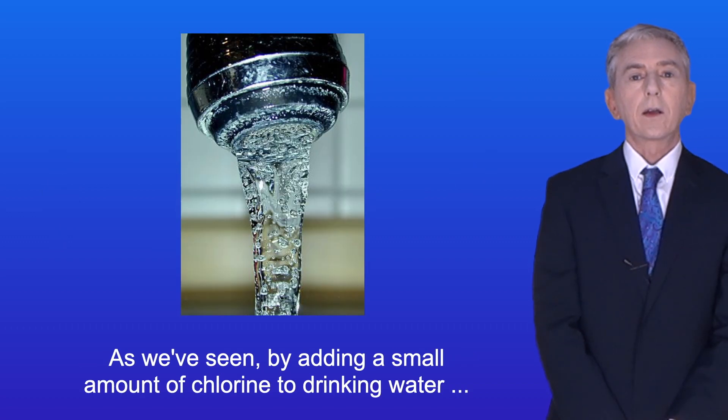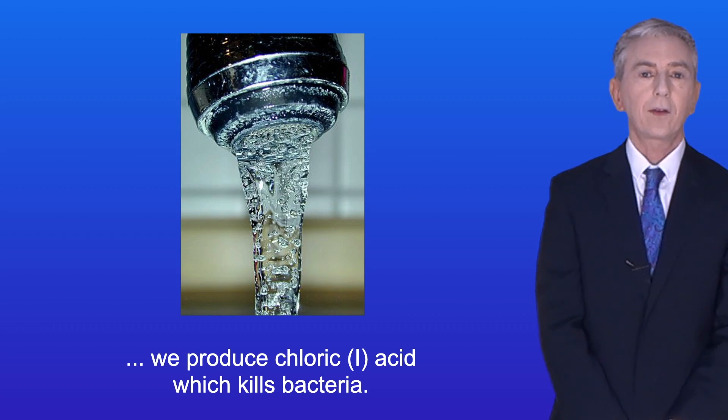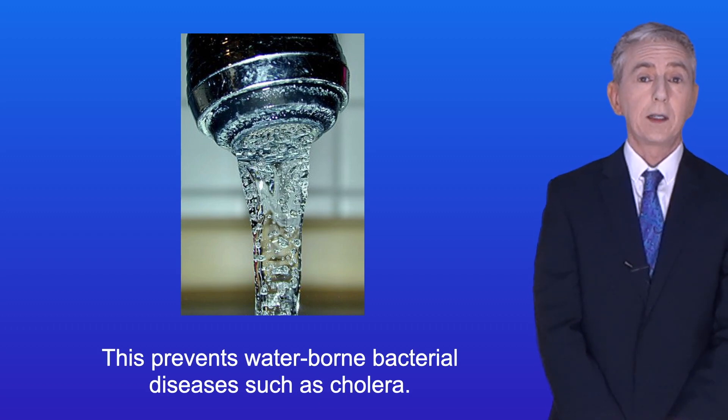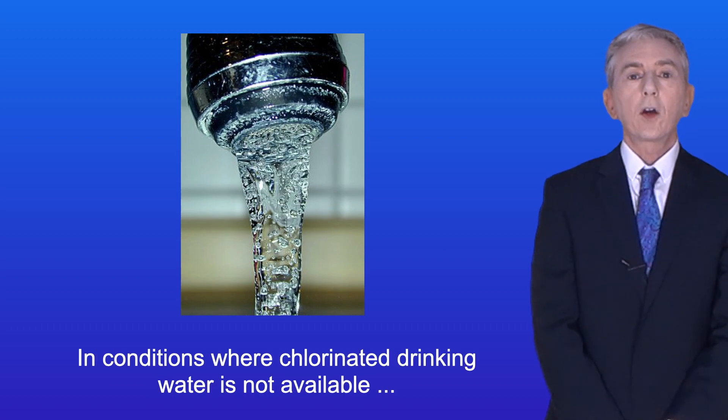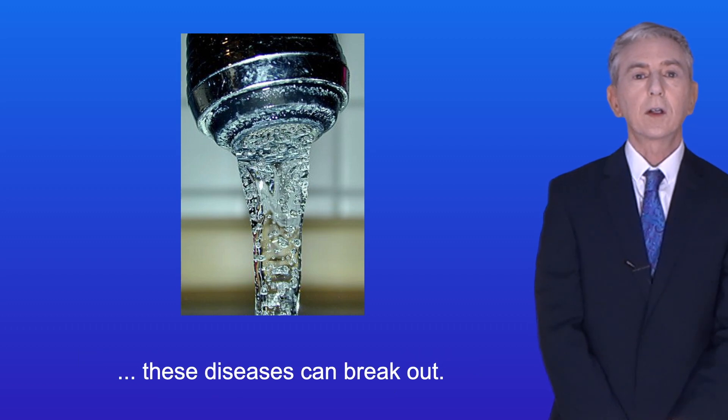So as we've seen by adding a small amount of chlorine to drinking water we produce chloric 1 acid which kills bacteria. And this prevents waterborne bacterial diseases such as cholera. In conditions where chlorinated drinking water is not available these diseases can break out.